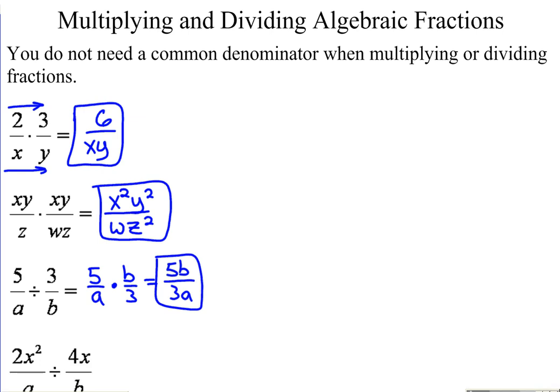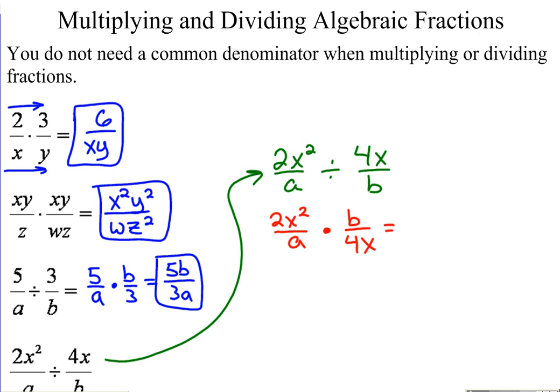Last one. Can't see it very well. I'm going to rewrite it over here for you so you can see it a little bit better. 2x squared over a divided by 4x over b. First fraction stays the same. Change the division to multiplication, take the reciprocal of the second fraction. Multiply straight across the top. We're going to get 2x squared b. In the bottom, 4ax.